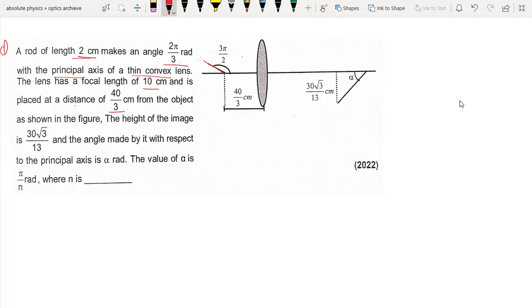The height of the image is root 3 upon 13, and the angle made by it with respect to the principal axis is alpha. We need to tell alpha is π by n, where n is what?